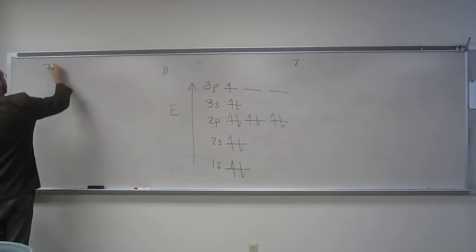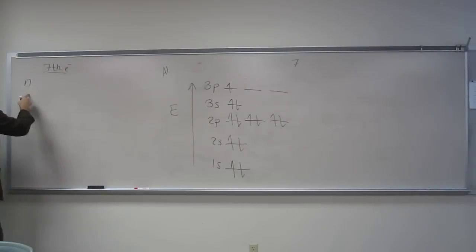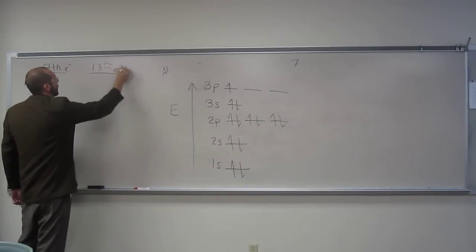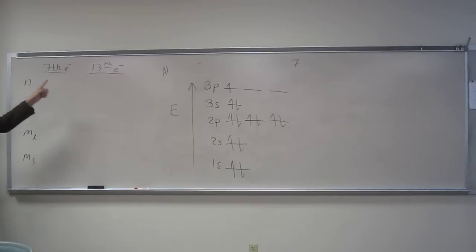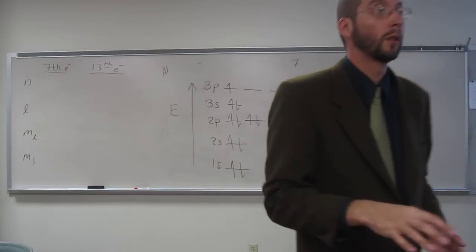So remember, n, l, m sub l, and m sub s, and the 13th. So what does it mean when they're talking about the 7th electron and the 13th electron? They're talking about using your filling rules. So like, Aufbau principle, then Pauli exclusion principle, and Hund's rule.